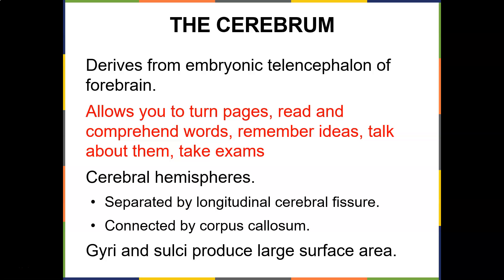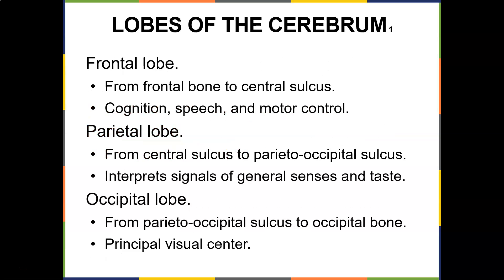The hemispheres are connected by the corpus callosum — great quiz question. The gyri and sulci produce large surface area. The frontal lobe, from the frontal pole to the central sulcus, does cognition, speech, and motor control.